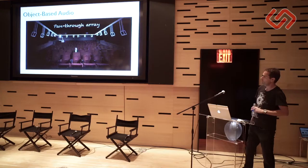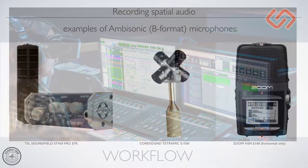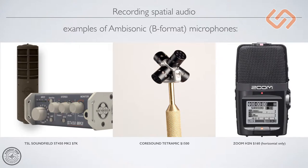A little bit about workflow: you can record spatial audio with ambisonic microphones. Here are three examples. What's really cool is that recently there's a $160 Zoom device that can now actually record first-order ambisonics - horizontal only, no height - but for $160 that's a really cool thing to have. If you get a Ricoh Theta for $300 and this device, for $450 you're ready to make VR.